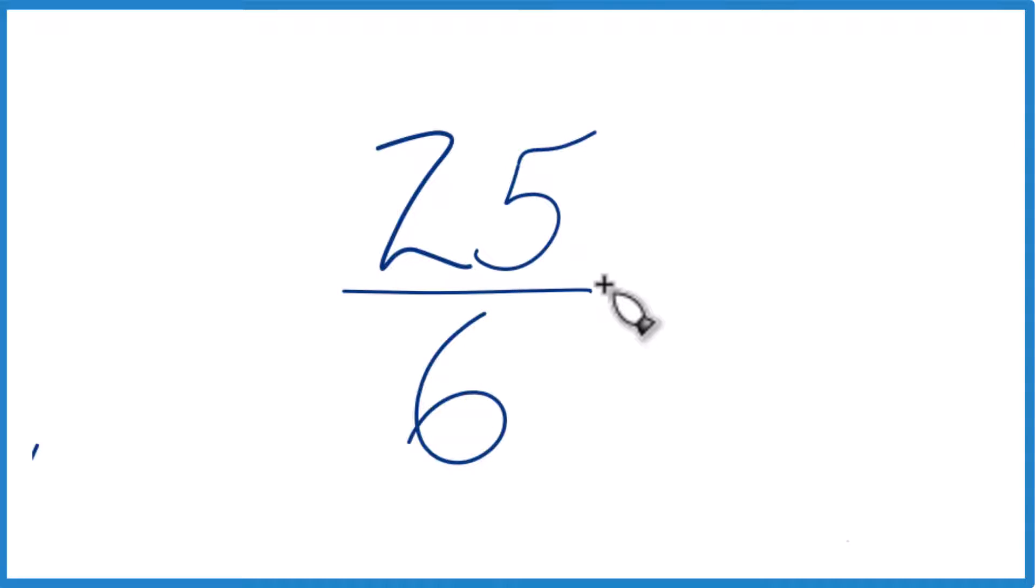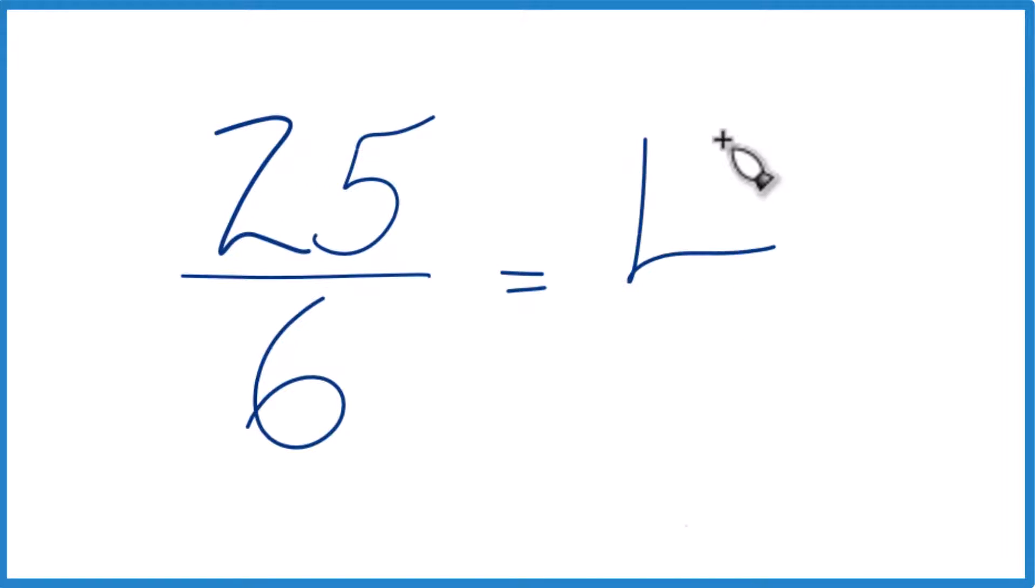Here's how we do this. So we want to see how many times 6 goes into 25. So 6 times 4, that's 24. Pretty close. So let's say 4, that'll be our whole number.